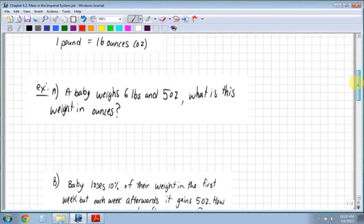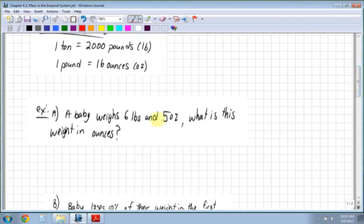For example, a baby weighs six pounds and five ounces. What is the weight in ounces? So it wants us to convert this to just ounces.